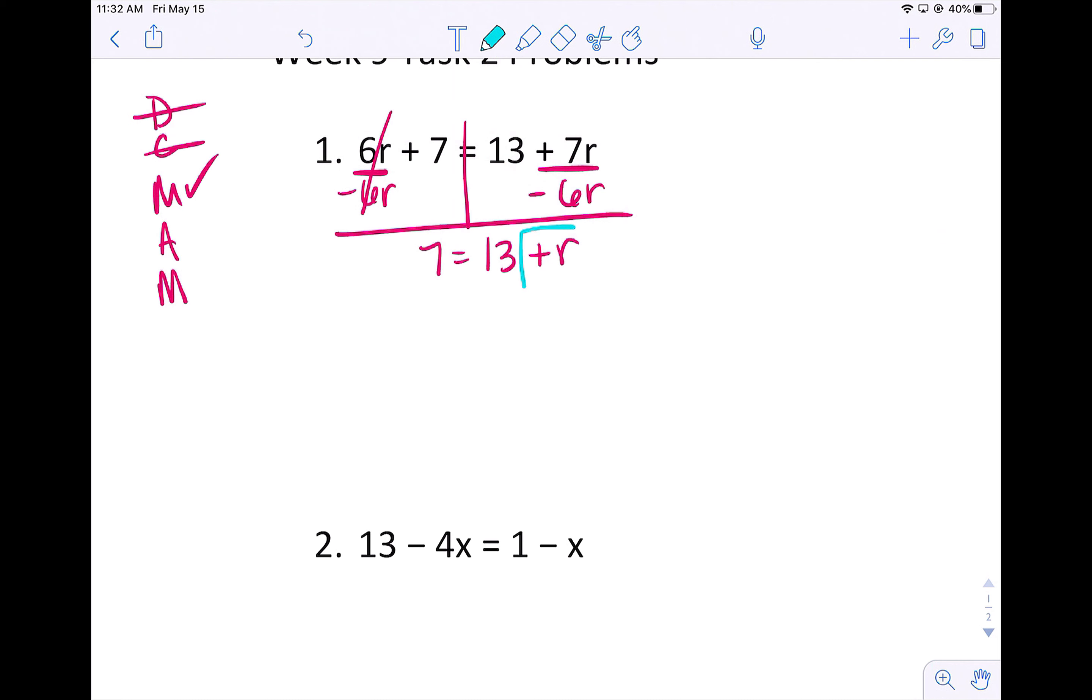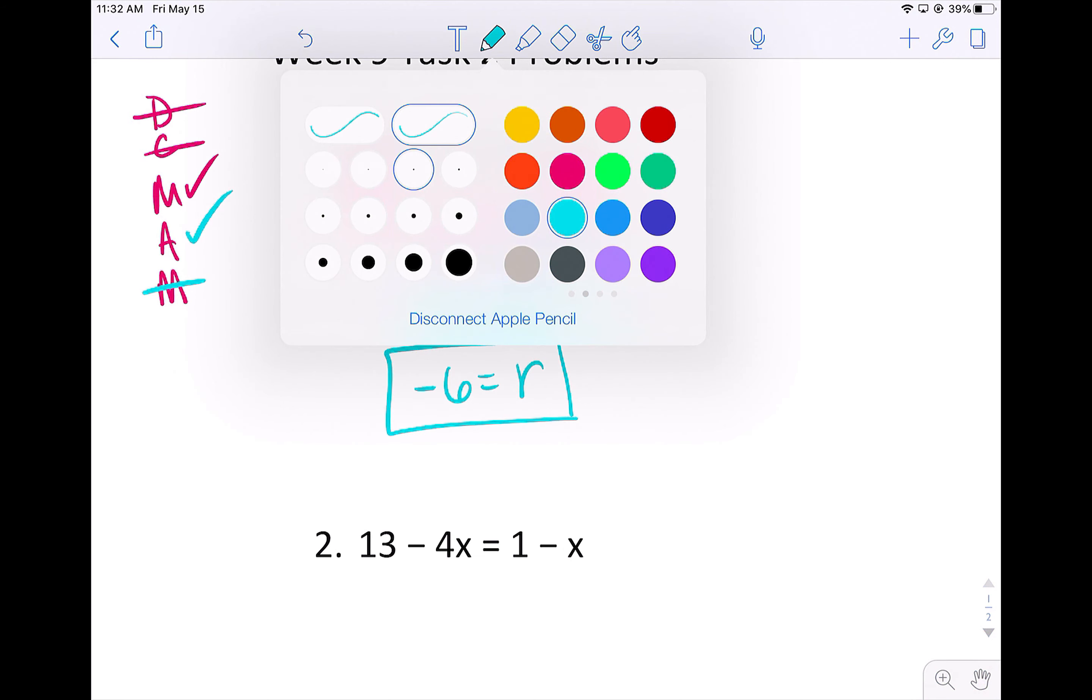I have a number outside of the r so I will need to add or subtract. In this case I will subtract and I will get negative 6. Then r is by itself so I do not need to do anything further to that problem.